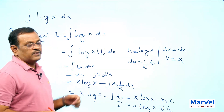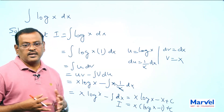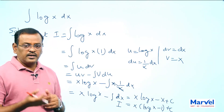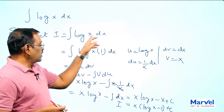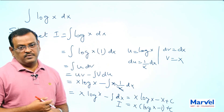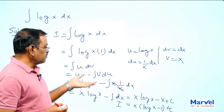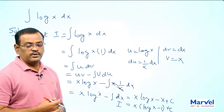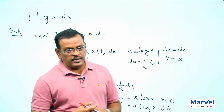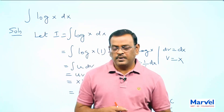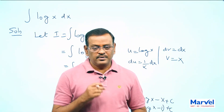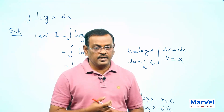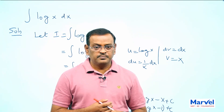Even though it has only one function, we can apply the integration by parts rule because this function is not directly integrable. Assume the function which is not directly integrable as u and introduce 1 — that is 1 into dx — as dv, then apply the integration by parts rule. Now you know the technique of how to apply integration by parts whenever the integrand has only one function which is not directly integrable.